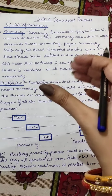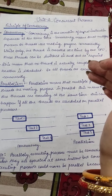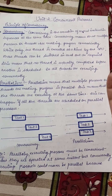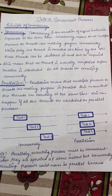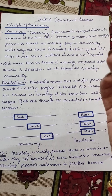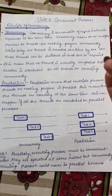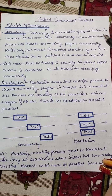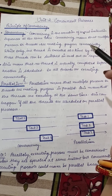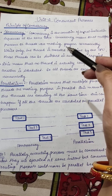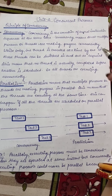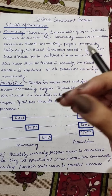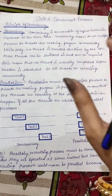Your computer is able to handle more than one task at the same time — you get the illusion that multiple tasks are happening simultaneously. But these tasks are just being handled at the same time; they are not completing at the same time. Concurrency is the execution of several instruction sequences at the same time — multiple processes or threads are making progress concurrently.